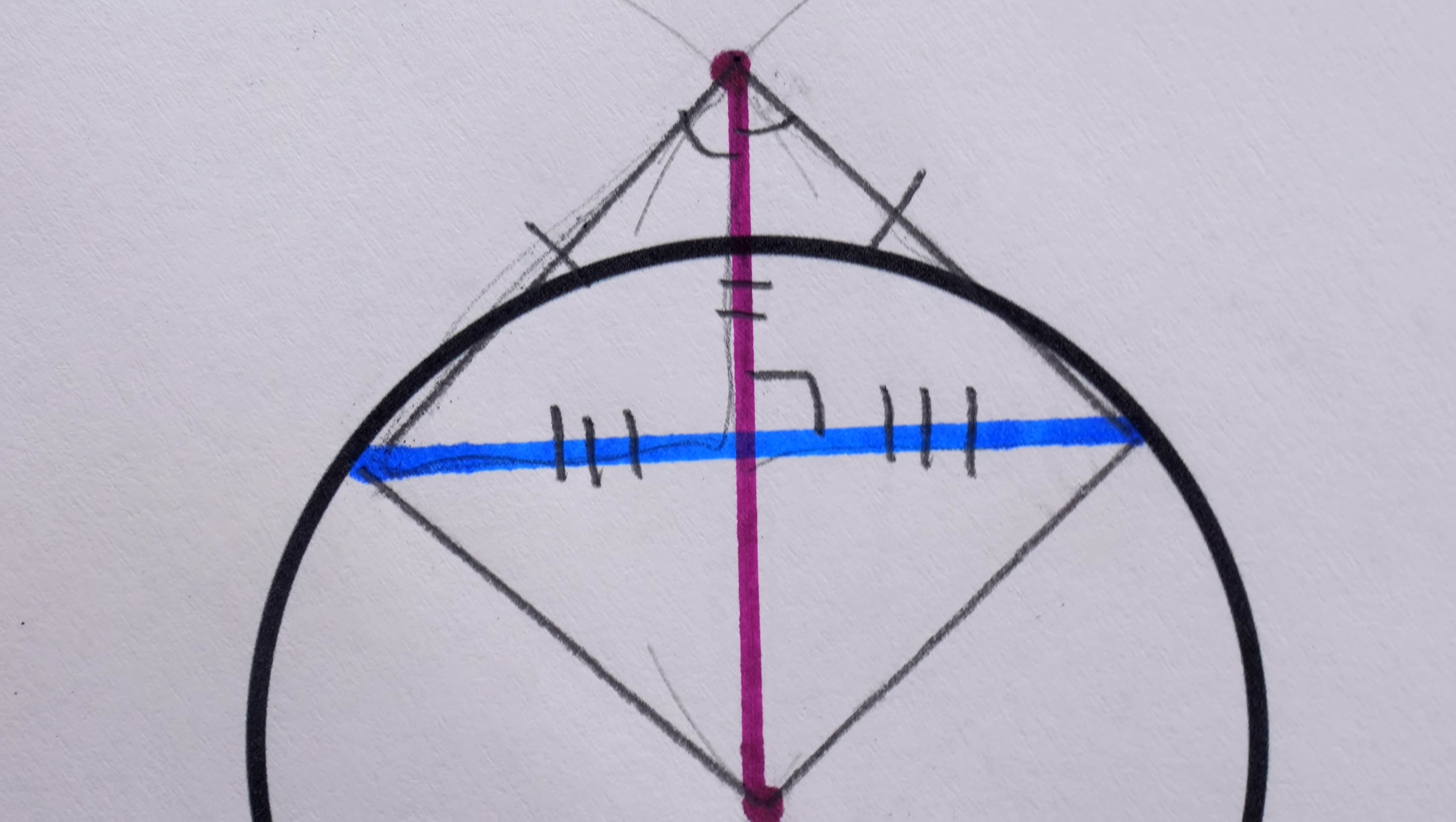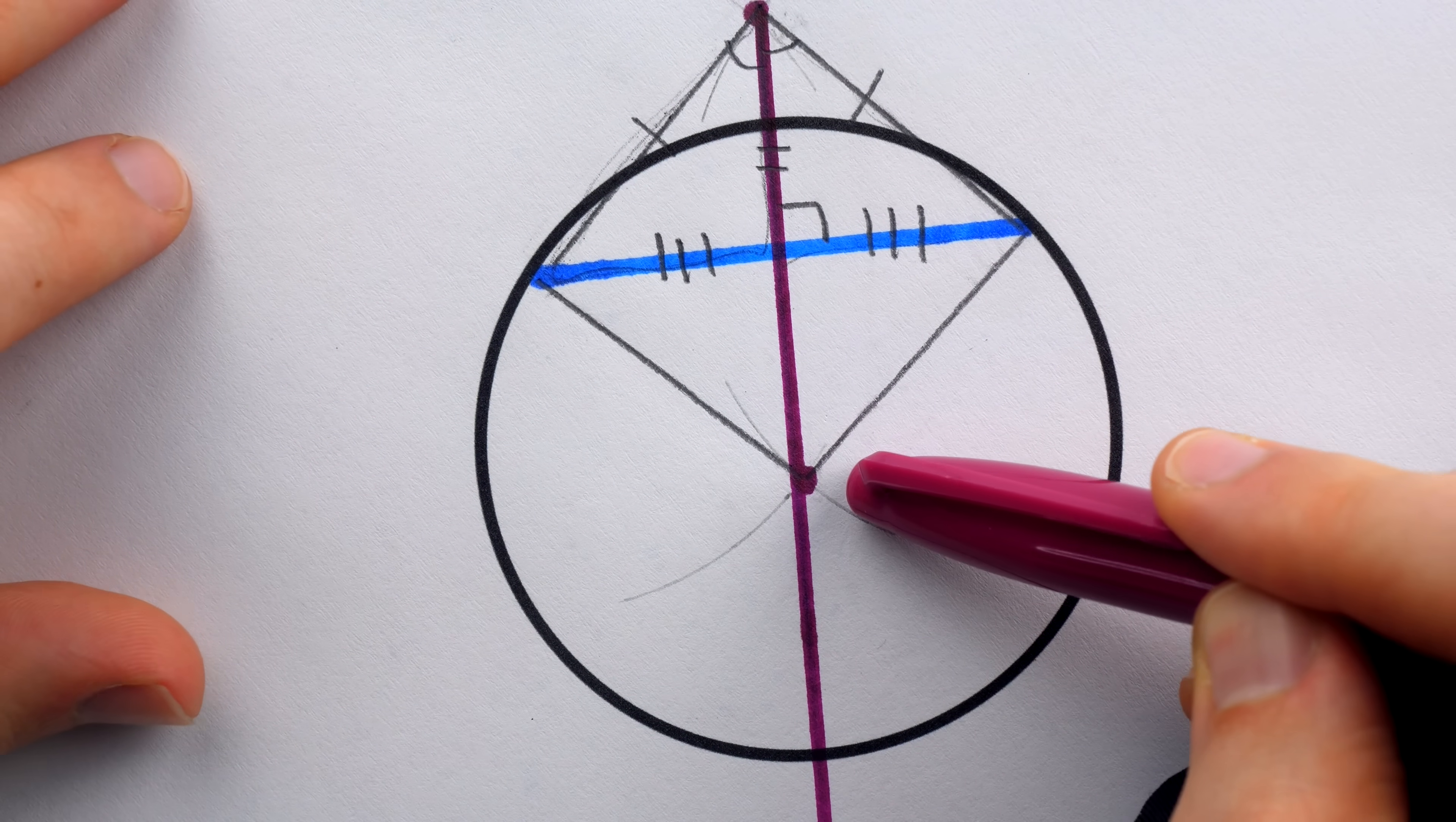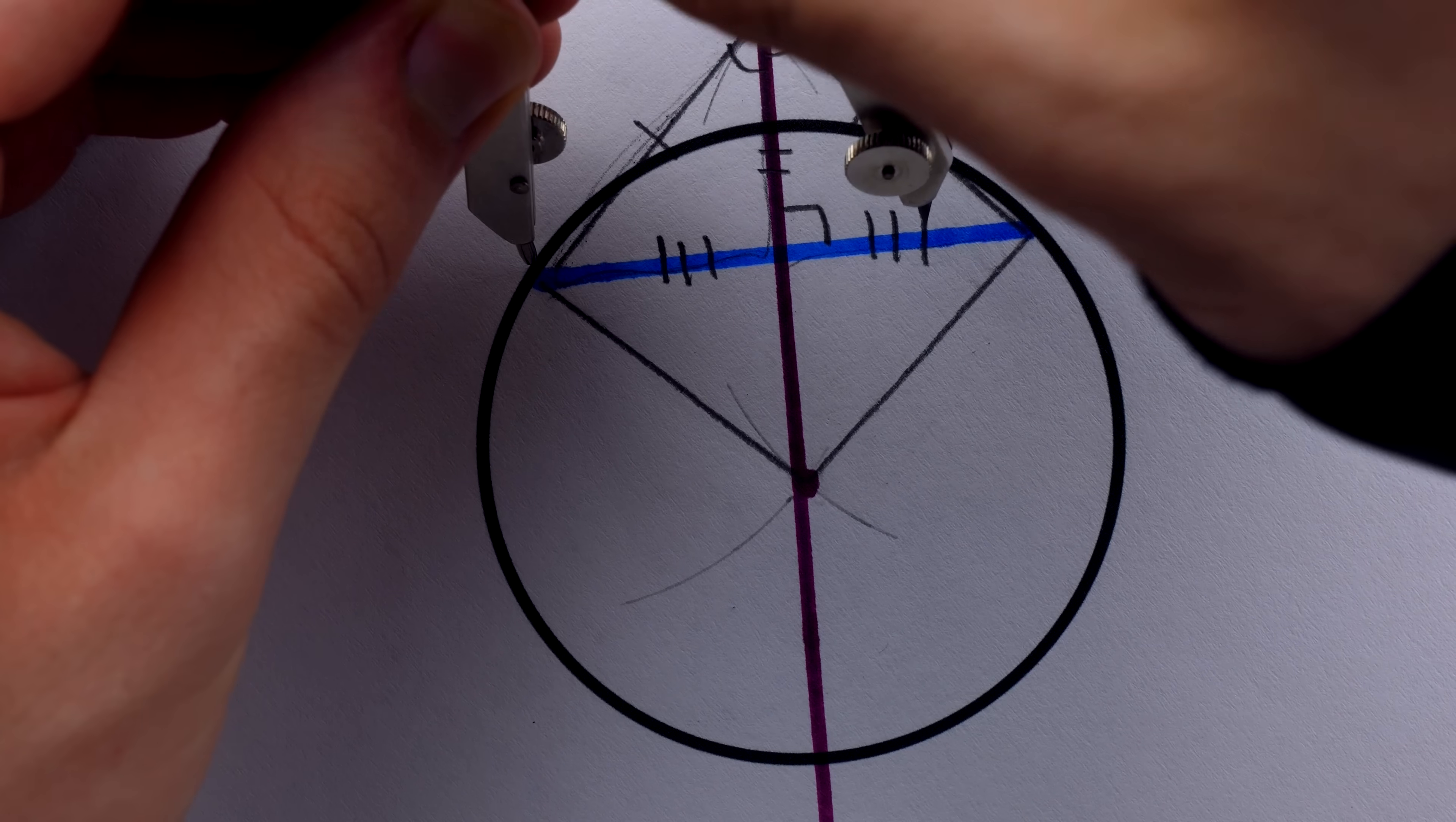Since this segment is a perpendicular bisector of a chord of this circle, we know that if we extend this segment, it will contain the center and a diameter and radius of the circle. Now at a glance, you might be thinking this point here is the center of the circle. Remember that it is not. That's just the intersection of these arcs, which came from a somewhat arbitrary width of the compass we selected.